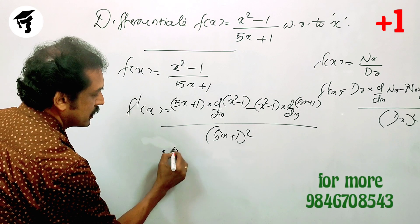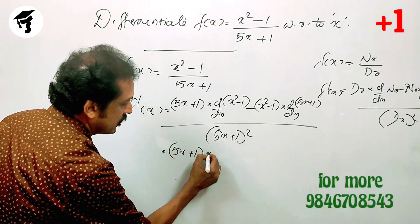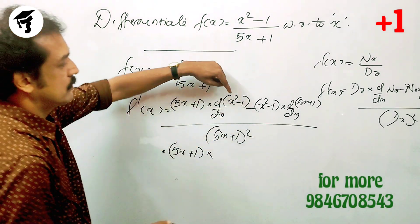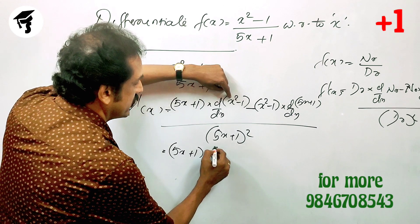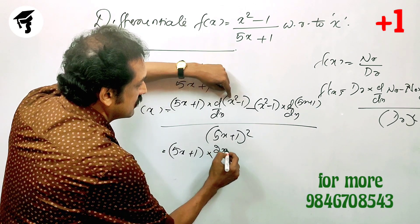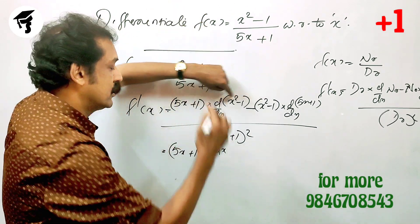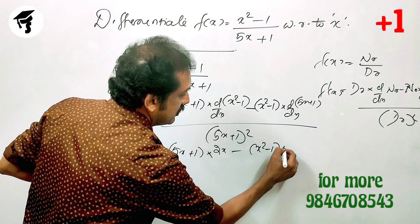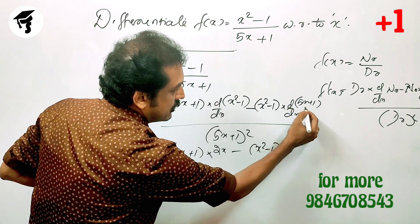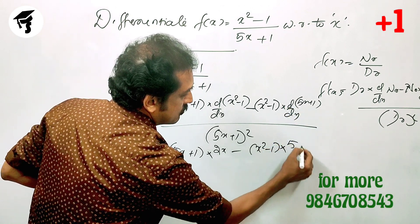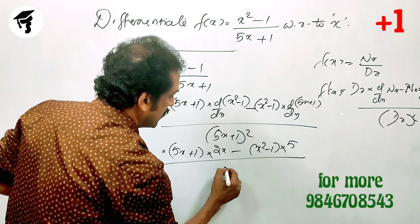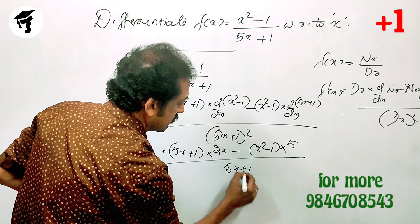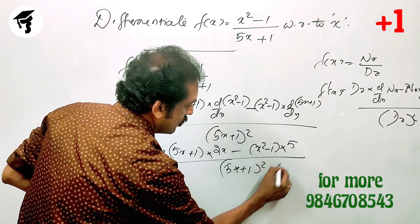That is 5x plus 1 into d/dx of x squared minus 1 — x squared derivative gives 2x, so we get 2x minus 0 — minus x squared minus 1 into d/dx of 5x plus 1, which gives 5, divided by 5x plus 1 the whole square.